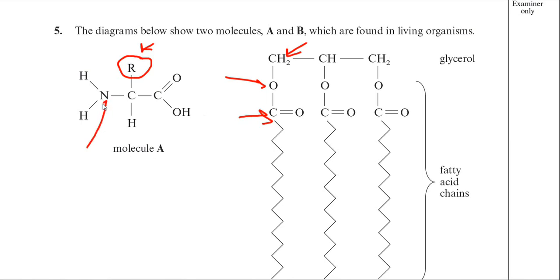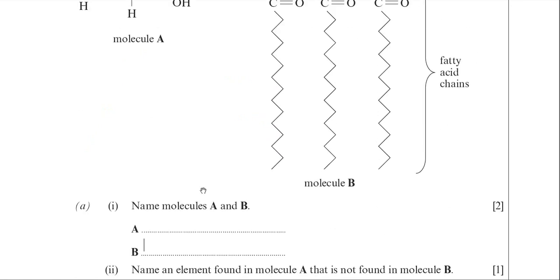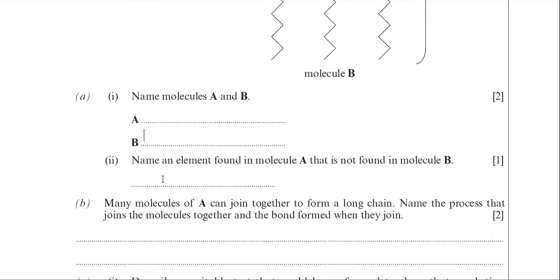But amino acids also have nitrogen in them. It's part of the NH2 group on the amino acid. Nitrogen is not found in triglycerides. So you could have put either sulfur or nitrogen for part two. So I've just jotted those answers in for you.